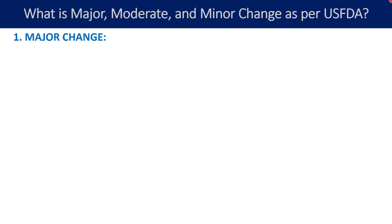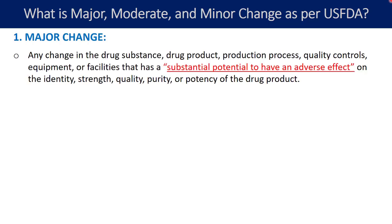What is the definition of major change? Any change in drug substance, drug product, production process, quality controls, equipment, or facilities that has a substantial potential to have an adverse effect on the identity, strength, quality, purity, or potency of the drug product. Any change that may have an adverse effect at the substantial potential level is categorized as a major change.